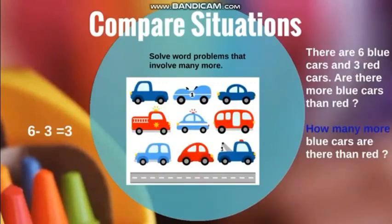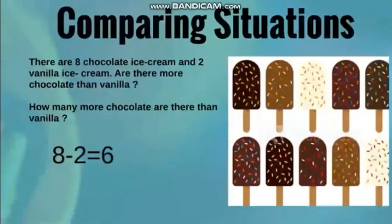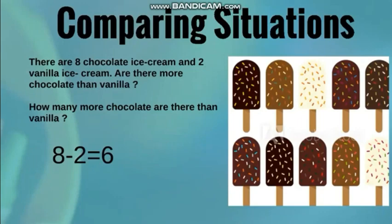Now let's look at another example involving word problems to know how many more, or to compare situations. We have chocolate ice cream and vanilla ice cream. Let's compare the number of chocolate ice cream to vanilla ice cream. The chocolate ice cream are the ones in the chocolate color, and the vanilla ice cream are in white color. Let's count the dark ones: one, two, three, four, five, six, seven, eight. So we have eight chocolate ice cream, and the white ones — two vanilla ice cream.